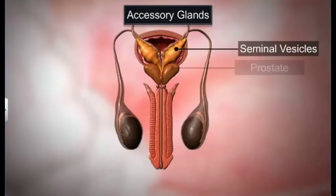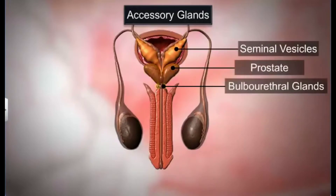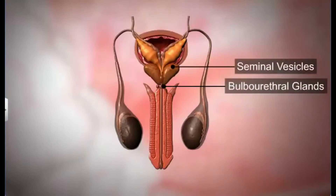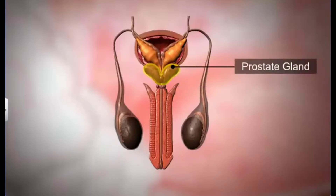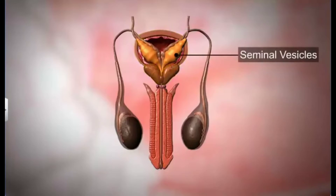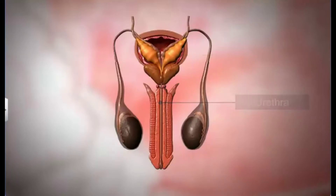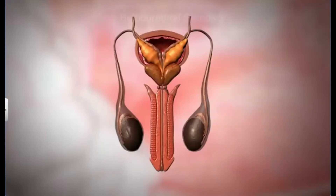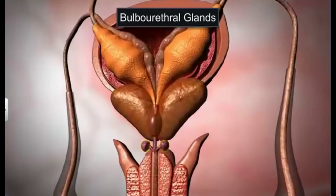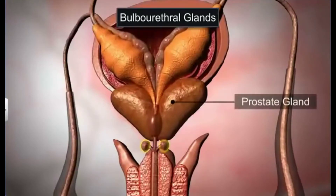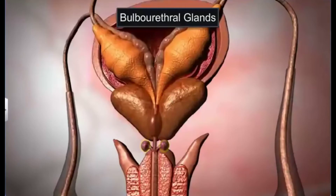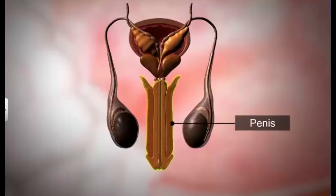The male accessory glands include a pair of seminal vesicles, the prostate, and a pair of bulbourethral glands. They secrete seminal fluid that contains fructose and prostaglandins. The prostate gland is present at the base of the urinary bladder around the base of the seminal vesicles; it opens into the urethra through many ducts, and the prostatic fluid contains calcium, citrate, and phosphate ions. The bulbourethral glands, or Cowper's glands, are pea-sized structures lying posterior to the prostate gland at the base of the penis; their secretions help in lubrication of the penis.